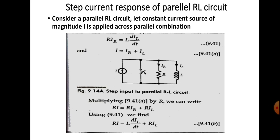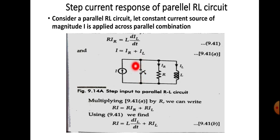Let us see the circuit diagram. There is an RL circuit shown here and we are using a constant current source or step current source having magnitude I. Its magnitude is I and it is constant throughout. Here is a switch, and before time t equal to 0 the switch is closed. Whenever the switch is closed, there is a short circuit path across this parallel combination, so the current will go through this short circuit path and there will not be any current through the parallel RL circuit path.